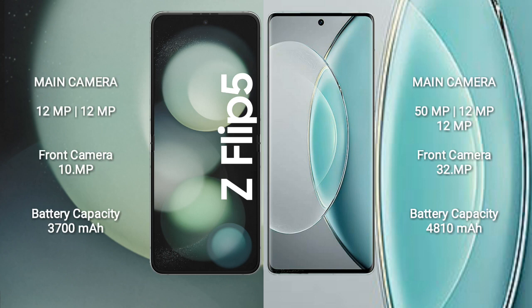Samsung Galaxy Z Flip 5 has a dual camera setup with 12MP plus 12MP, and a front camera of 10MP. Vivo X90s has a triple camera setup with 50MP plus 12MP plus 12MP, and a front camera of 32MP.